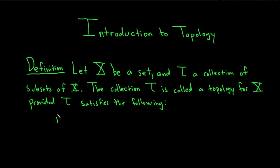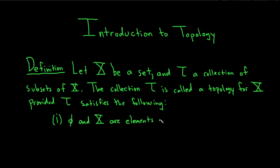The first condition is that the empty set and capital X are elements of tau. That is the first condition that we require.